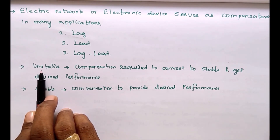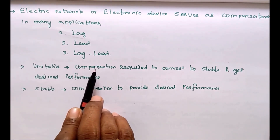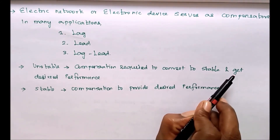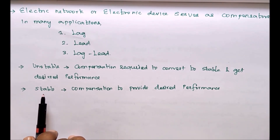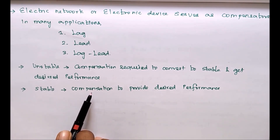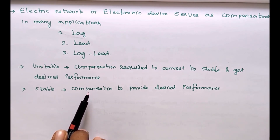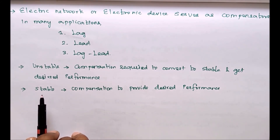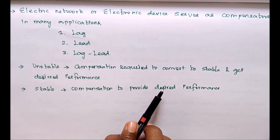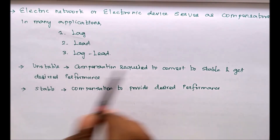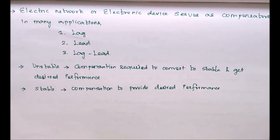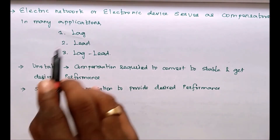For example, if a particular system is running unstably, by using compensation techniques we can convert it to stable and also achieve the desired specifications. If the system is already stable but you want to get the desired performance, you can also add a compensator. So the purpose of a compensator is either to convert an unstable system to a stable one, or to get the desired performance from a stable system.